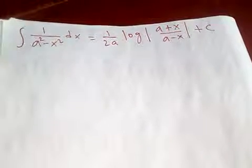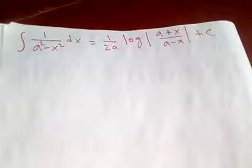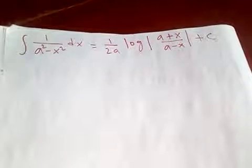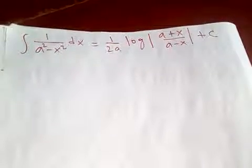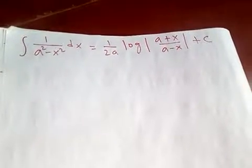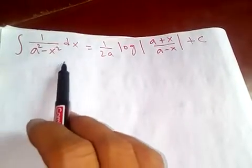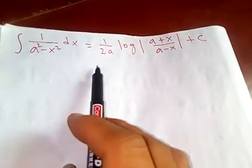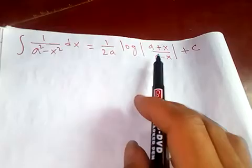Thanks for watching my video. Today let's integrate this: the integration of 1 over (a² - x²) dx, where a is a constant. This equals (1/2a) log of (a+x)/(a-x) plus the constant of integration.